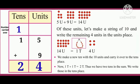Now, 1 ten plus 1 ten is equal to 2 tens. Thus, we have 2 tens in the sum. We write those in the tens place. So the answer will be 15 plus 9 is equal to 24.